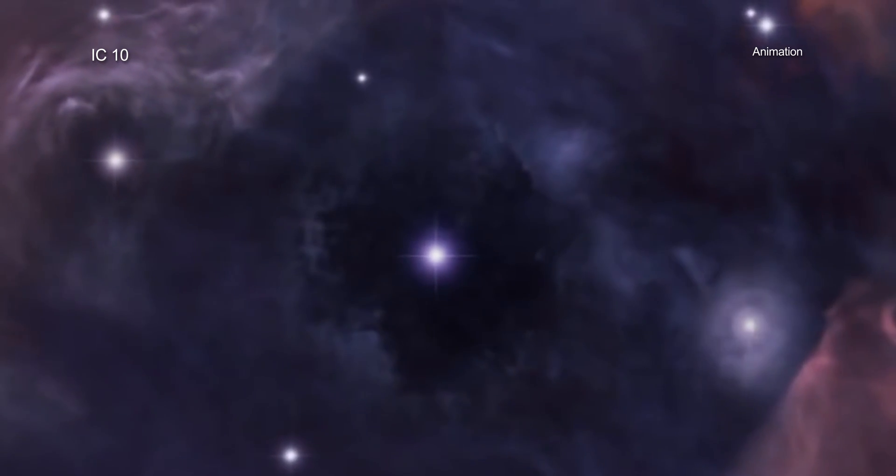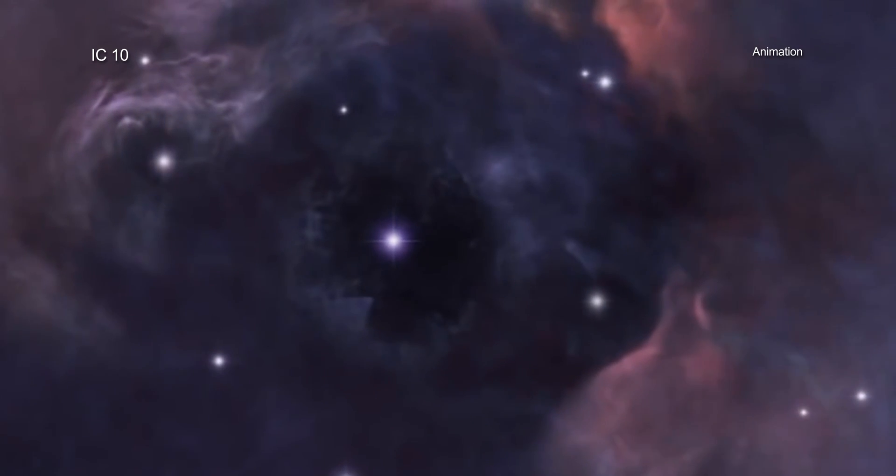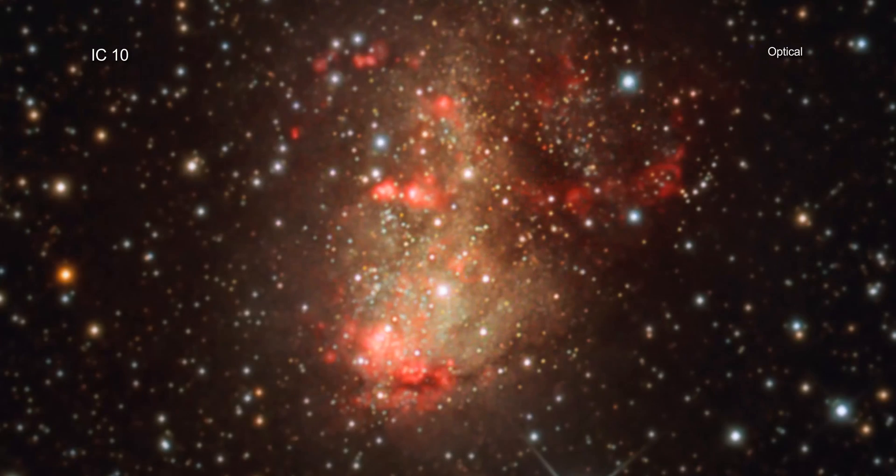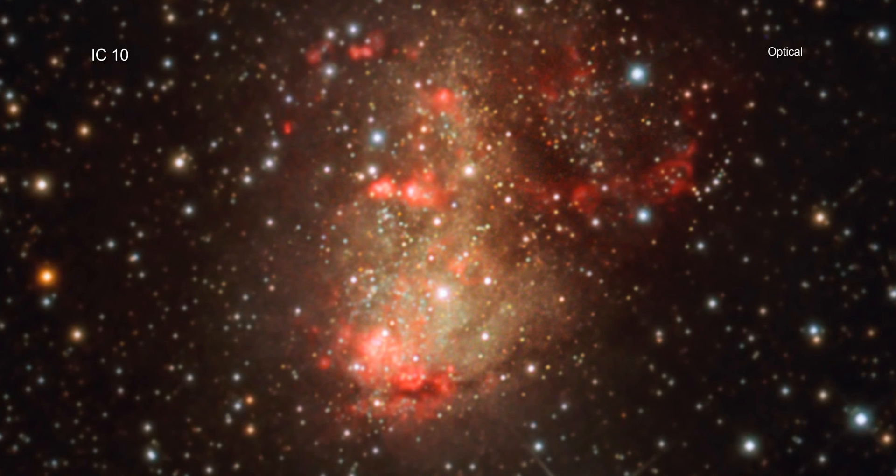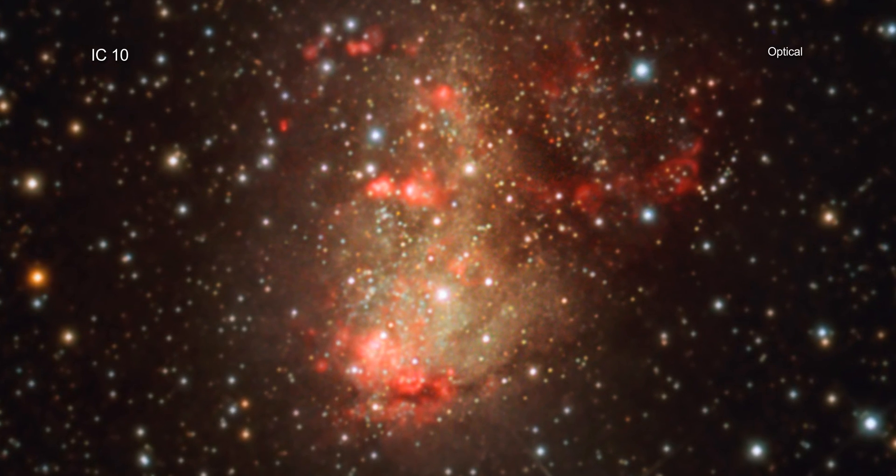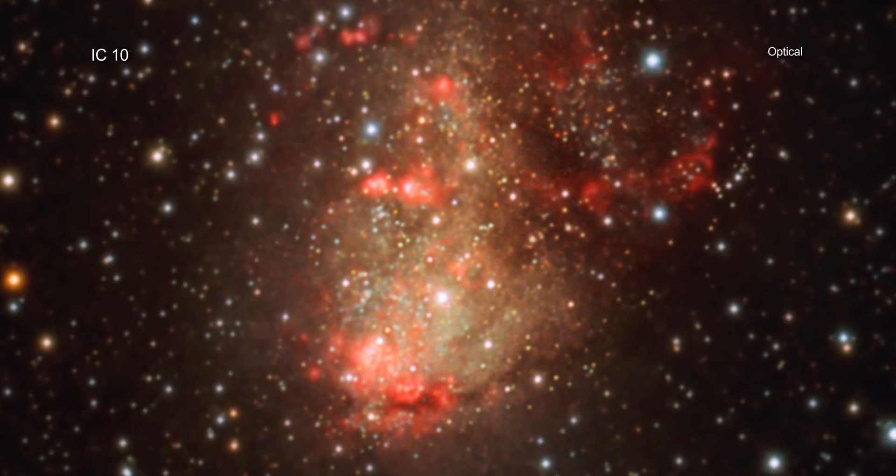Long before starbursts became a popular brand of candy, starbursts were known to astronomers. In 1887, American astronomer Lewis Swift discovered a glowing cloud, or nebula, that turned out to be a small galaxy about 2.2 million light-years from Earth.